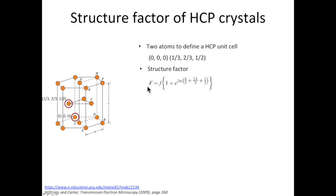Notice that the H over 3, 2K over 3, L over 2 is complicated. You can rewrite this term as x for convenience, and substitute that into the structure factor.